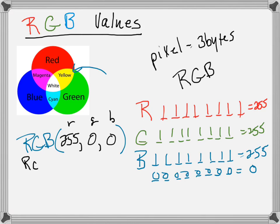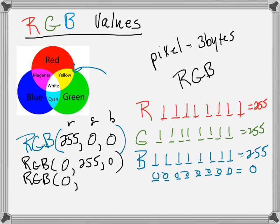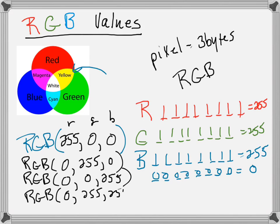RGB(0, 255, 0) would be green. RGB(0, 0, 255) would be blue. And RGB(0, 255, 255) means the green is turned on, the blue is turned on, and the red is completely turned off. Both blue and green are on, so that would be this color right here — we call it cyan.